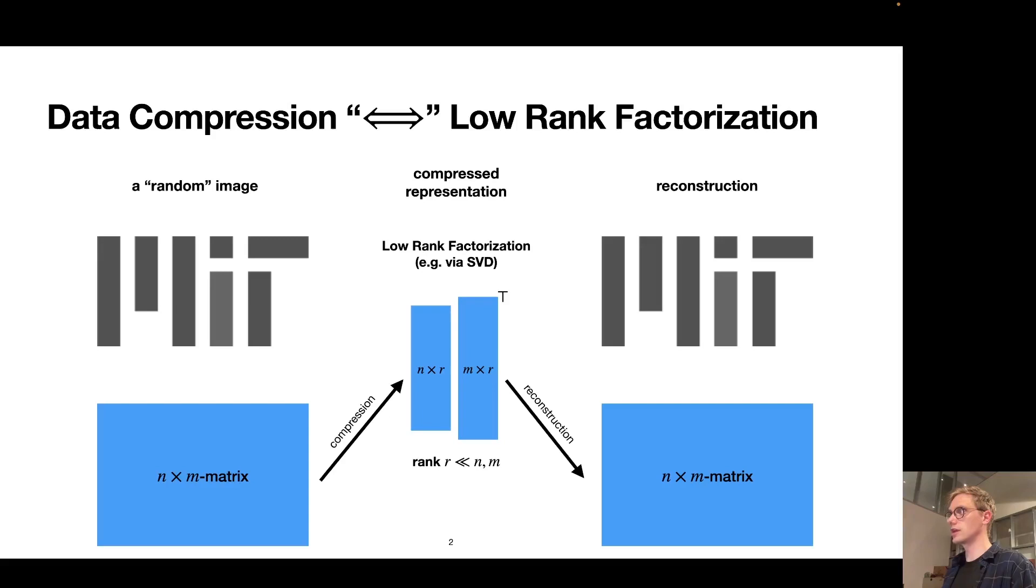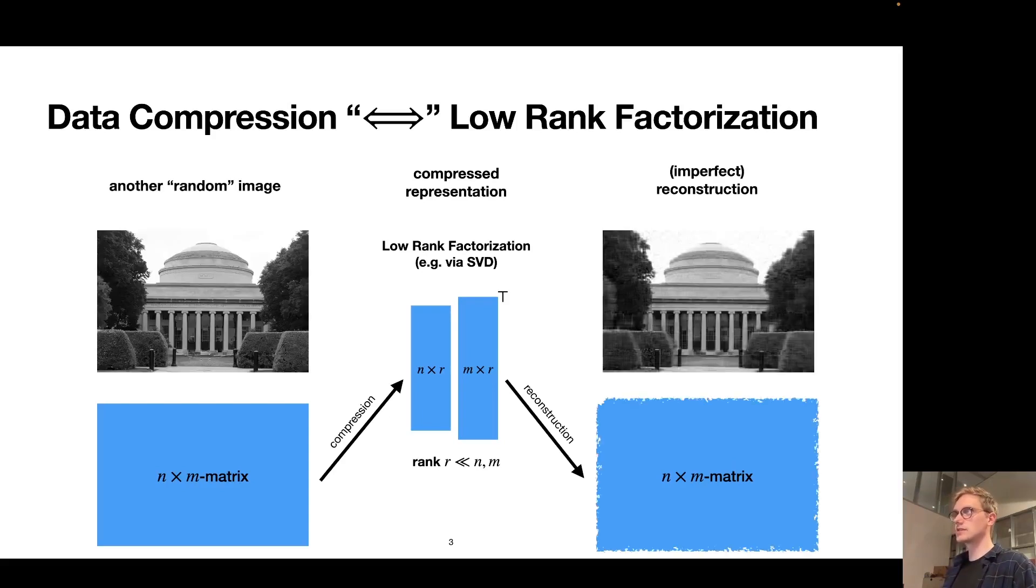If the image is very structured like this one here, that may actually be possible without losing any information in the process. But of course not any matrix or data set will admit such an exact low rank factorization. Instead, it's much more common to seek a low rank factorization that provides for some purpose a good enough approximation of the original matrix or in this case image. For example here we can compress the image but then the reconstruction is no longer perfect, yet perhaps good enough depending on what the application is.